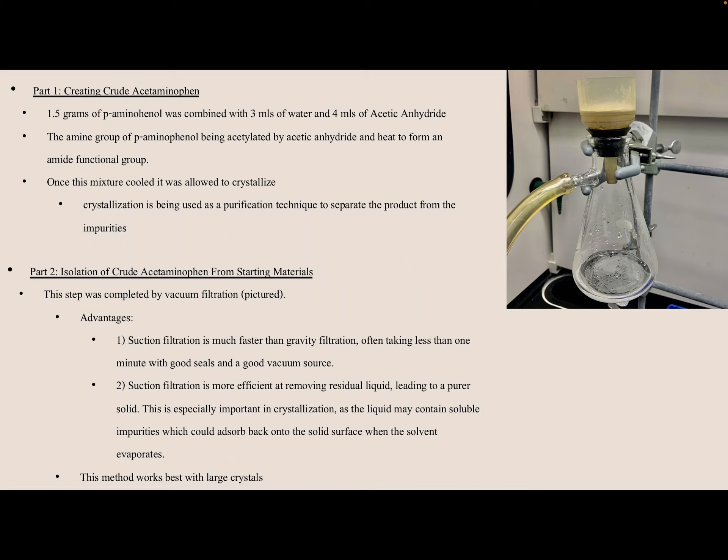I broke the synthesis down into three parts. Part one is creating the crude acetaminophen. A brief overview: 1.5 grams of our starting material was combined with 3 mL of water and 4 mL of acetic anhydride. These are rough estimates — the protocol called for specific numbers, but in the lab there was a lot of eyeballing. This is where the amine group of p-aminophenol is acylated by acetic anhydride, and we used heat to form an amide functional group. Once the mixture cooled, it was allowed to crystallize over about 10 minutes. Crystallization is used as a purification technique to separate the product from impurities.